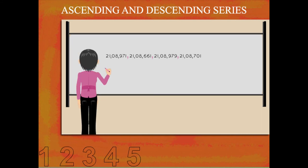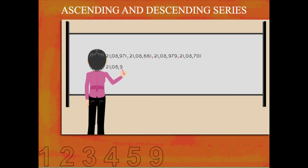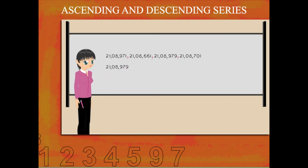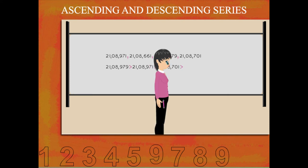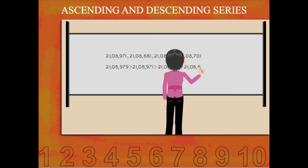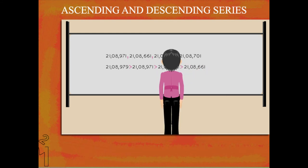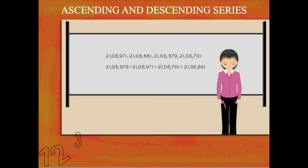She writes 21,08,979 as the first number and puts the less than sign after the number. She now writes all the numbers with the sign in between.